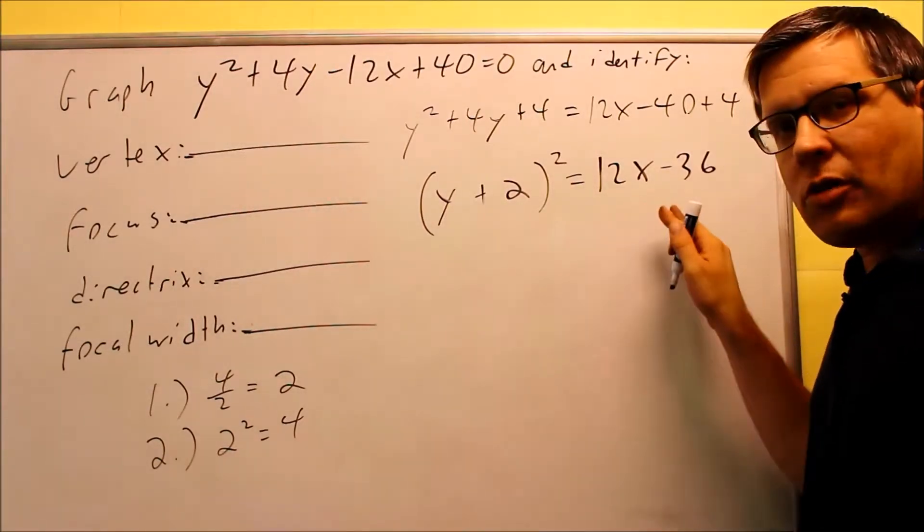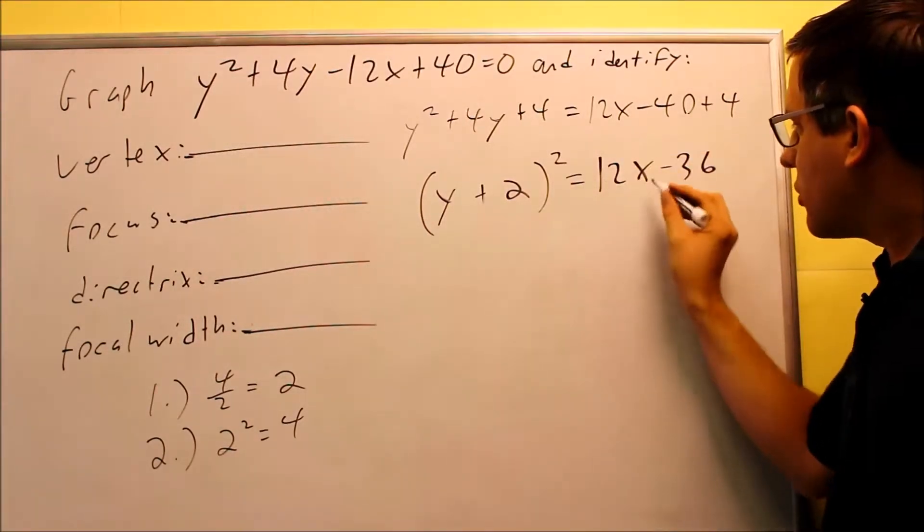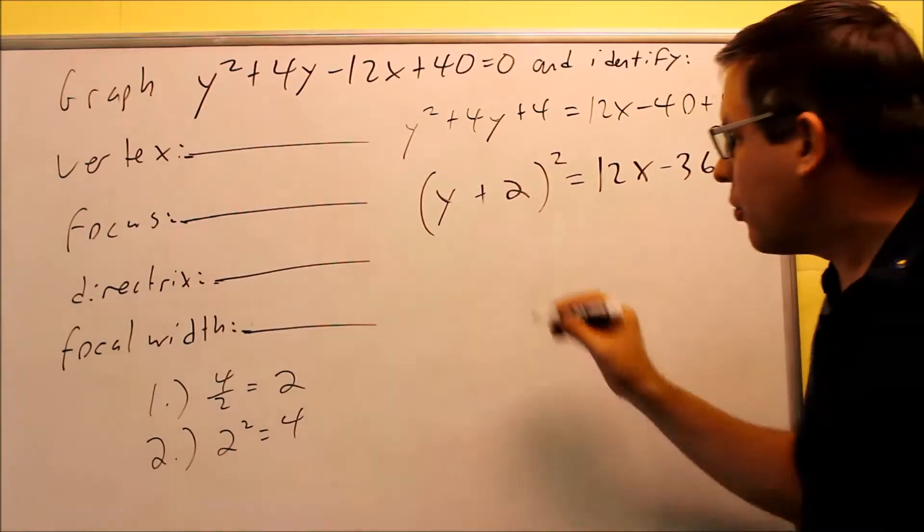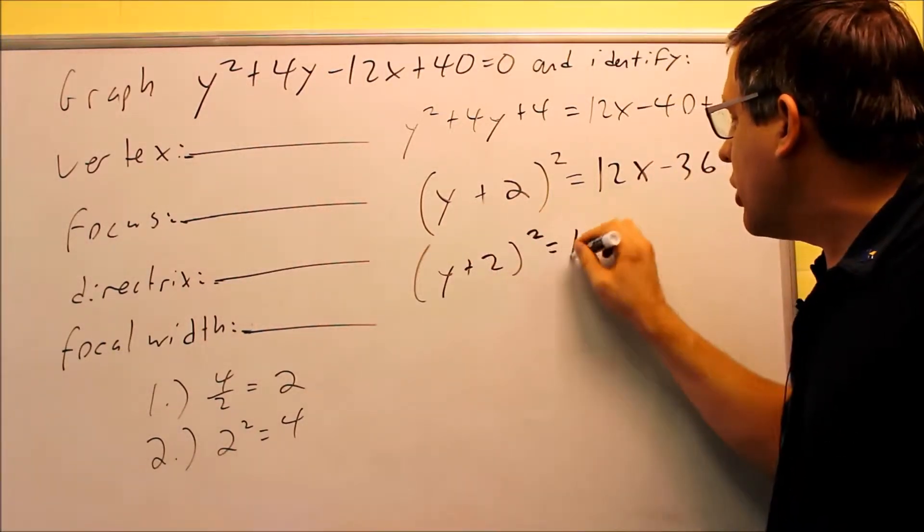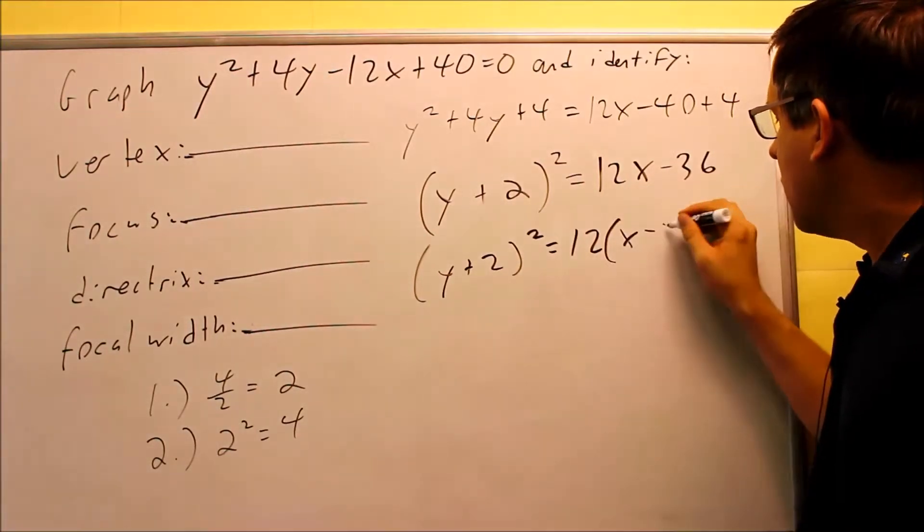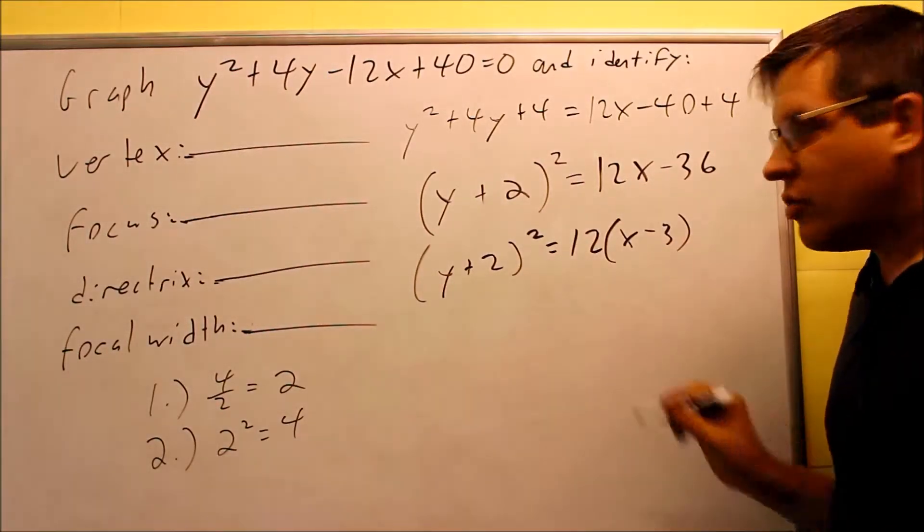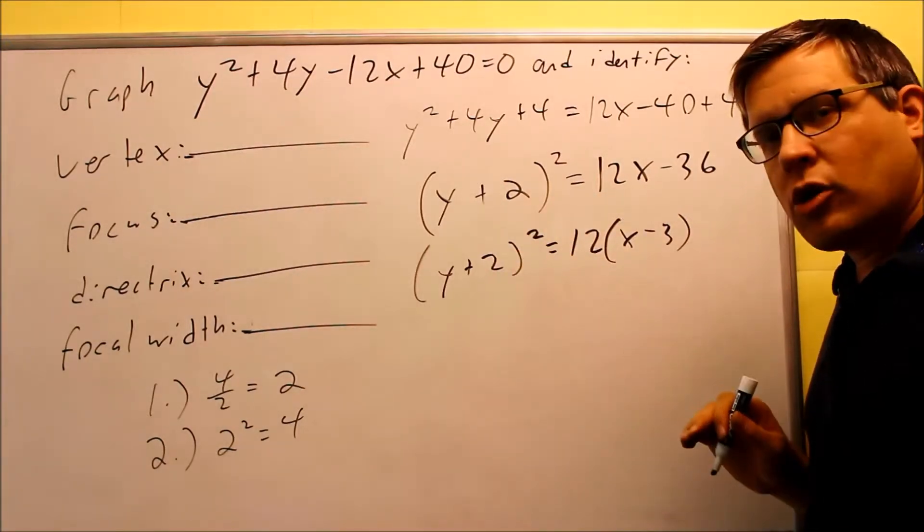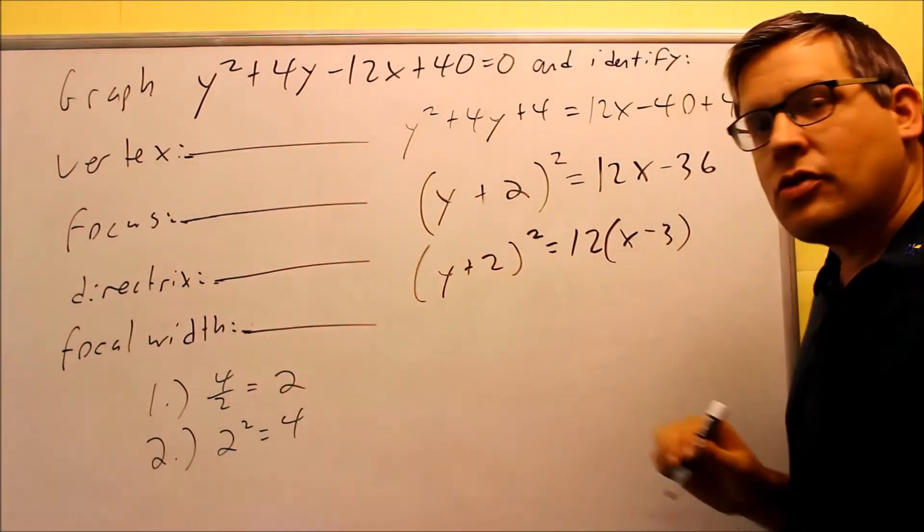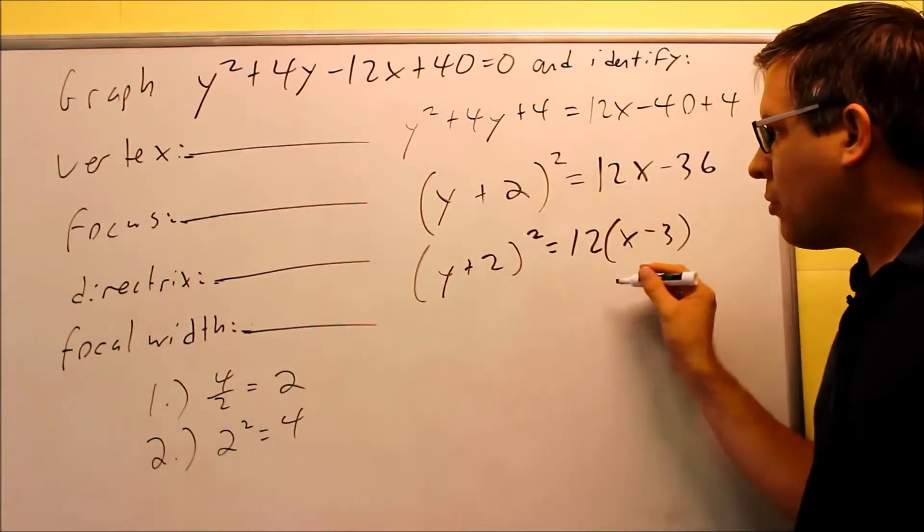To get this to look like their models, I need to factor this and get x by itself inside the parenthesis. So I do need to do one more step there. Y plus 2 squared will equal 12, I factor out the 12 and I get x minus 3 as a result. So now this is going to be my equation and this is the one I'm going to work with now to answer these questions.